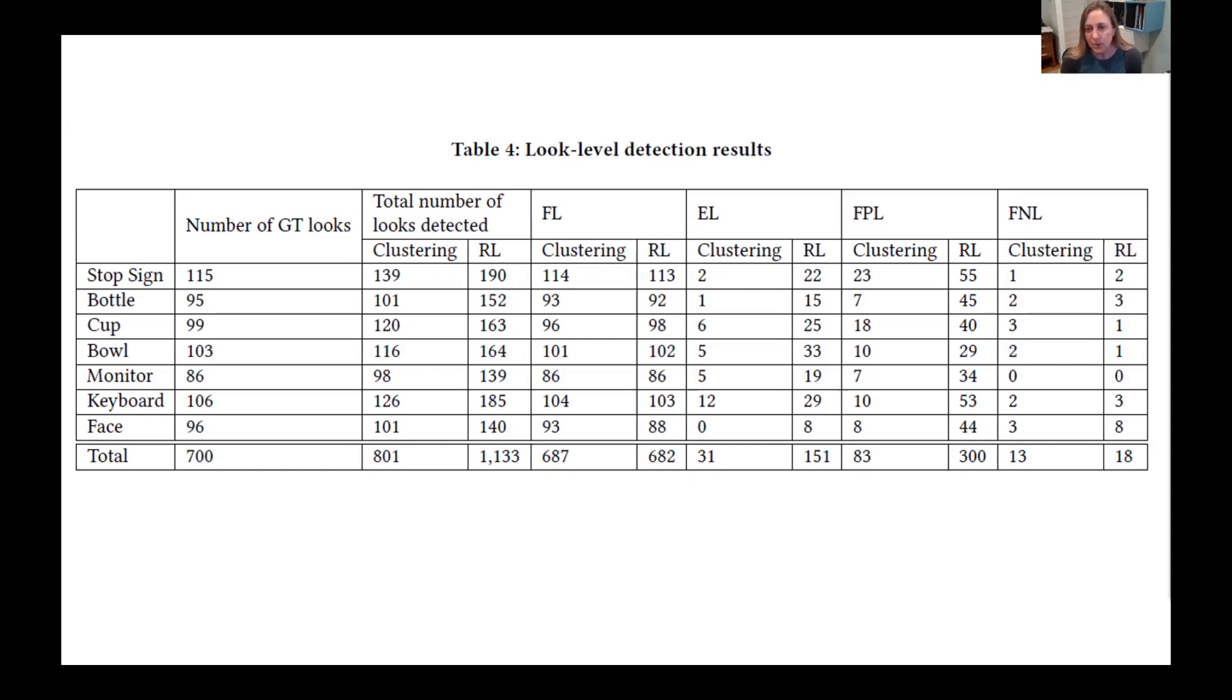For the next steps, we plan to improve ground truth characterization of looks by using multiple trained raters. This would provide an advantage of whether the algorithm's performance is within the range of normal variation in trained raters. We're also seeking to speed up performance with the goal of running these calculations on a laptop in real time. Currently, the object detection step is taking the bulk of the time and is ripe for improvement. Thank you for listening.